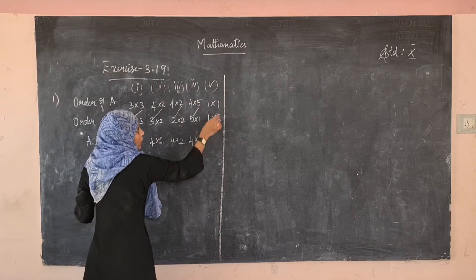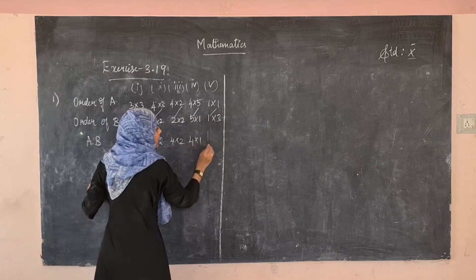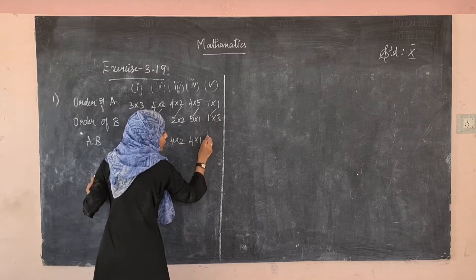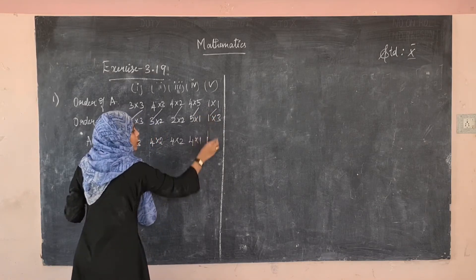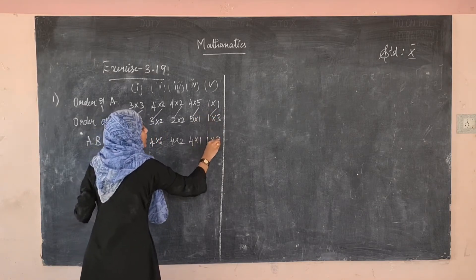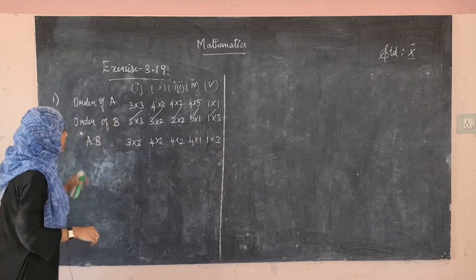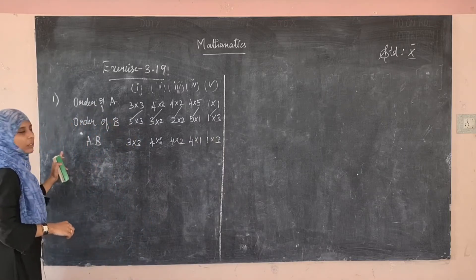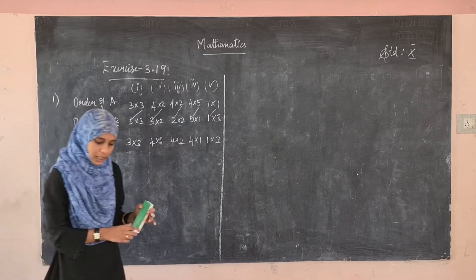And here 1×1 and 1×P — these two are same, so the resulting order of the product matrix is 1×3. This is how we have to find the order of the product matrix.